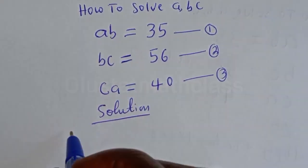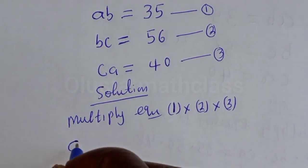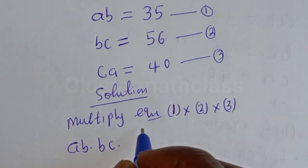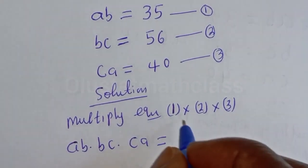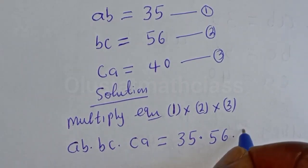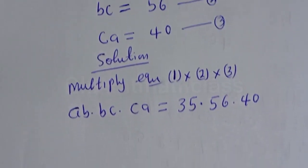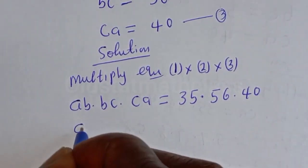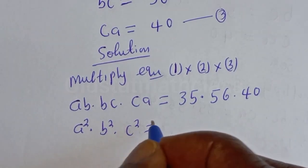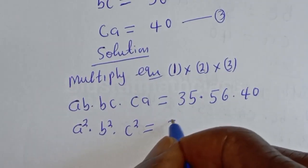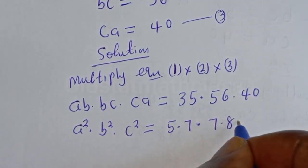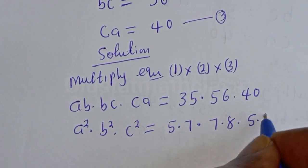Let's multiply equations 1, 2, and 3 together. Then AB multiplied by BC multiplied by CA is equal to 35 multiplied by 56 multiplied by 40. And this gives A squared multiplied by B squared multiplied by C squared is equal to 35 — which is 5 times 7 — multiplied by 56 — which is 7 times 8 — multiplied by 40 — which is 5 times 8.